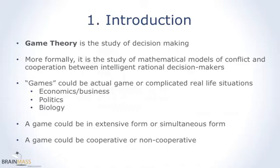Extensive form is also called normal form games because most games are in fact in that form. In this lecture, we will not look at extensive form games — we will only look at simultaneous games, which is when players make their moves at the same time. A typical example is rock, paper, scissors: you can't play one after the other because then the person moving last will always win, so they play at the same time.